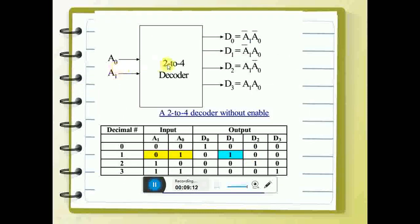This is an example of a 2-to-4 decoder. If you have 2 inputs, A0 and A1, the output is available on one of four lines. If A1=0 and A0=0 (i.e., 0,0), the decimal number is 0 and it is available on D0. 0,1 — decimal 1 — is available on D1. 1,0 — decimal 2 — is available on D2. 1,1 — decimal 3 — is available on D3. So it is basically converting a binary number to its corresponding decimal output.